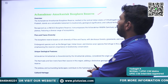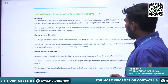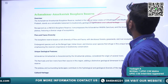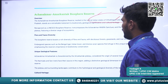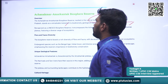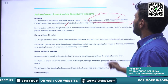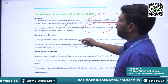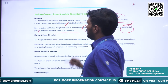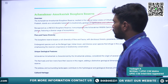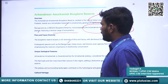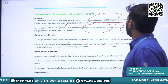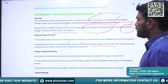Next is Achanakmar-Amarkantak Biosphere Reserve. It is located in the central Indian states of both Chhattisgarh and Madhya Pradesh and is recognized as a UNESCO Biosphere Reserve. It encompasses Achanakmar Wildlife Sanctuary, featuring a diverse range of ecosystems. The wildlife here includes the Bengal tiger, Indian bison, and diverse avian species.